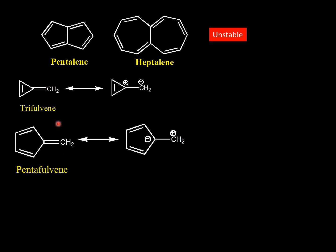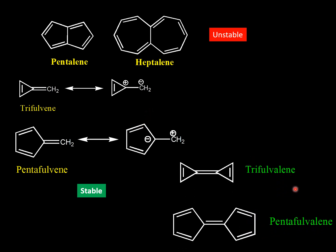While cyclopropene and cyclopentadiene, where you have an exocyclic double bond, they will have a significant dipole moment due to the contribution of dipolar resonance structures, and thereby attain aromatic character — so they are stable compounds. On the other hand, trifulvene and pentafulvene are unstable and have not been isolated so far.